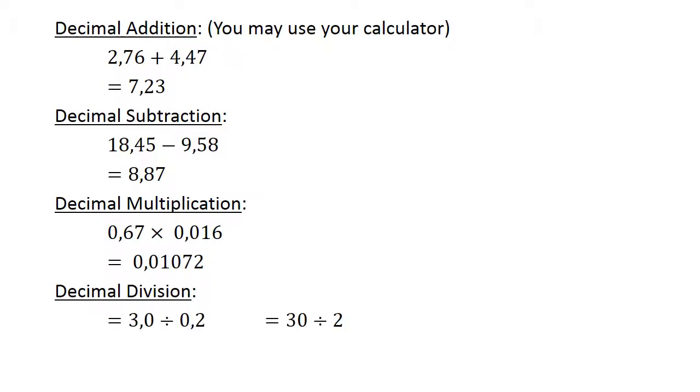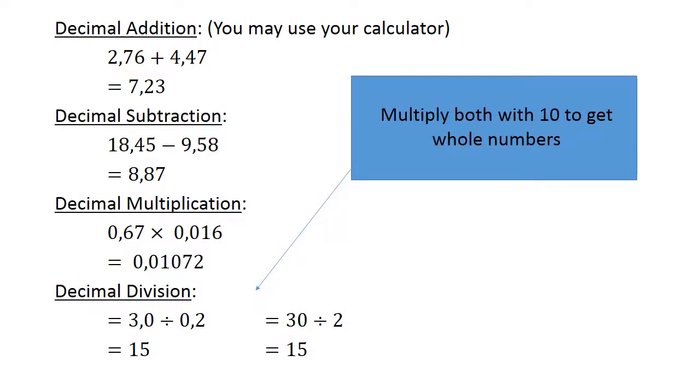Decimal division. 3.0 divided by 0.2. Multiply both with 10 to get whole numbers. 30 divided by 2 equals 15.